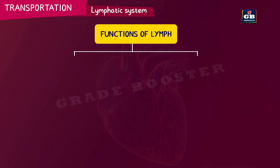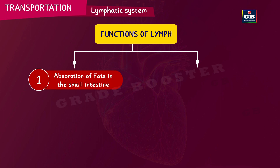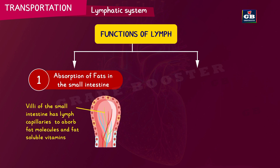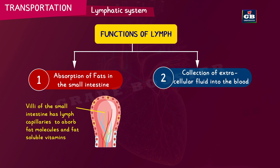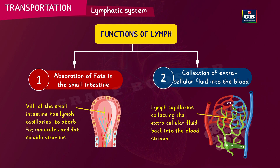The lymphatic system does two important jobs. First, lymph absorbs digested fats in the intestines — lymph vessels can be seen in the villi of the small intestine where nutrient absorption takes place. Second, it collects extracellular fluid and deposits it into the bloodstream. This is all about the human transport system. Now let us study the transport system in plants.